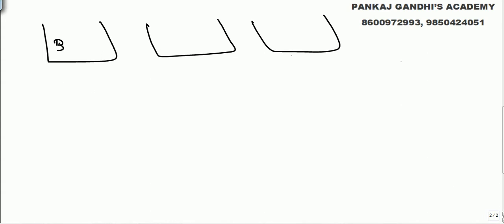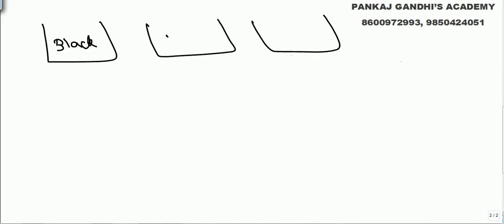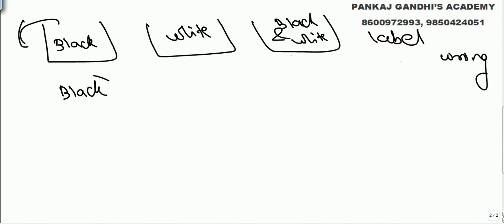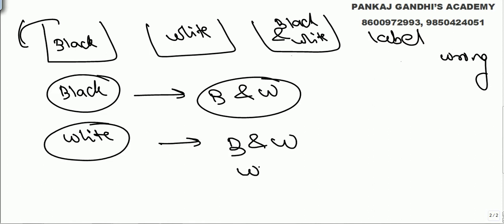Let's say the boxes are labeled: 'black,' 'white,' and 'black and white' — and all labels are wrong. If I open the box labeled 'black' and take out one ball without looking inside, then check it outside: if a black ball comes out, we know it's surely black and white combination or only white.